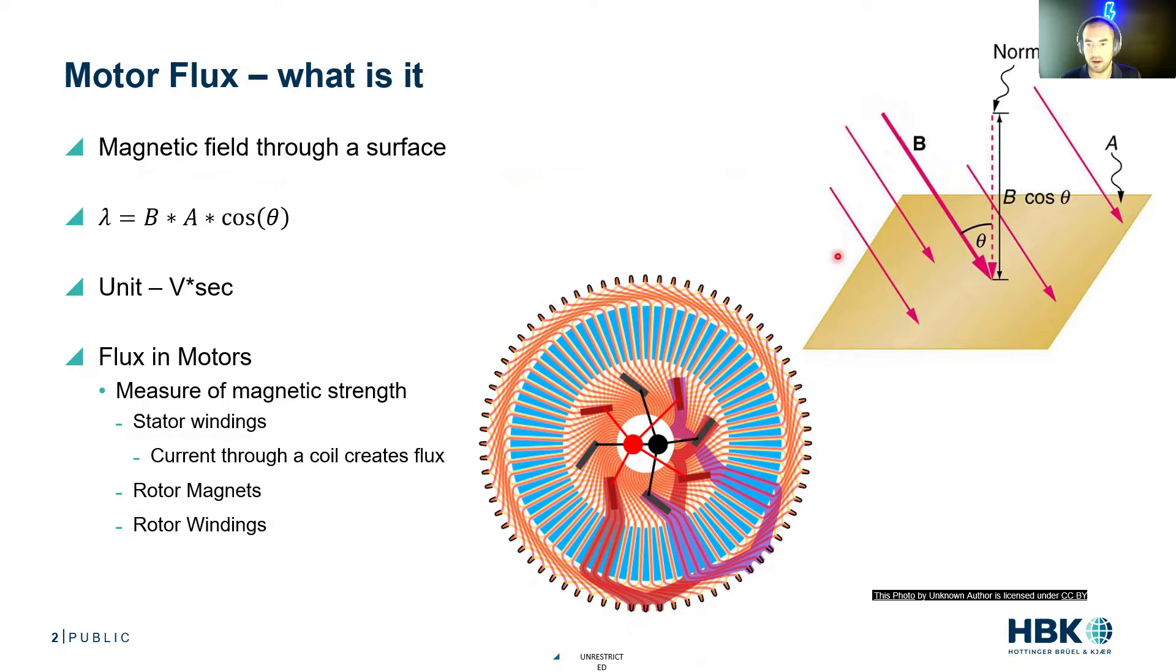If we think that these pink arrows, or this magnetic field, have a strength or a density to them, and they're going through a surface, indicated by my yellow rhombus here.